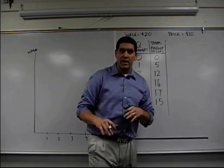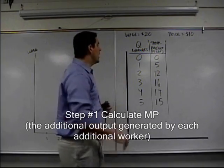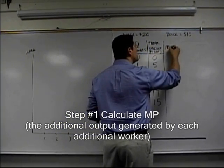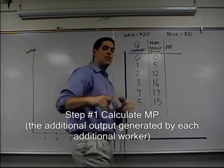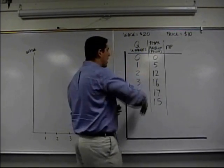Okay, did you figure it out, you know how many workers we should hire? Let's go over it together. The first thing you knew that you had to calculate was marginal product. Marginal product is the additional output generated from each additional worker. In this case, it's the additional pizzas created by these cooks.